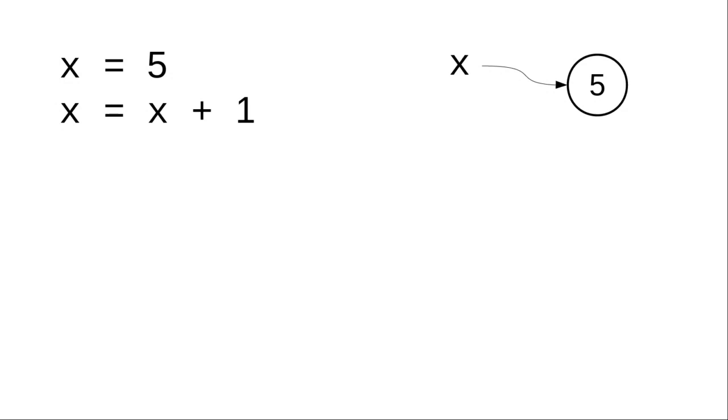Instead, you're going to follow the rule. Whenever you see that symbol in the middle, you will always go to the right-hand side first and work it out completely. What's in x right this moment? x right now refers to 5, so that substitutes to 5 plus 1, so the right-hand side works out to 6.